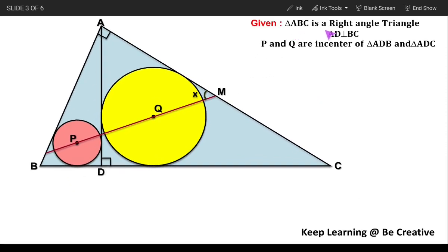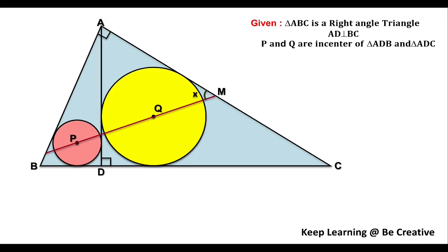We have been given a right angle triangle ABC, which is right-angled at A. From A, we are drawing the altitude AD which is perpendicular to BC. P and Q are the incenters of triangle ADB and triangle ADC. Since these are the incenters, we are going to use the concept that incenters are the intersection points of the angle bisectors. So we will draw certain angle bisectors which will be needed.